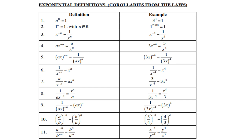Definition 9: 1 over (ax) all to the power negative n — both terms go up and become positive, giving ax to the power n. For example, 1 over (3x) to the power negative 4 becomes 3x to the power positive 4. Definition 10: a over b to the power negative n — you interchange a and b, so a goes to the denominator and b goes to the numerator, and n becomes positive. For example, (3/4) to the power negative 2 becomes (4/3) to the power positive 2. Definition 11: a to the power negative m over b to the power negative n — a goes to the denominator and b goes to the numerator, changing their signs. For example, x to the power negative 3 over y to the power negative 4 becomes y to the power positive 4 over x to the power positive 3.